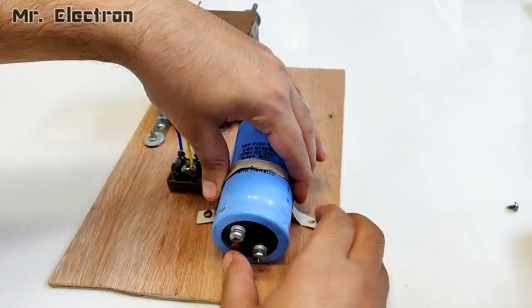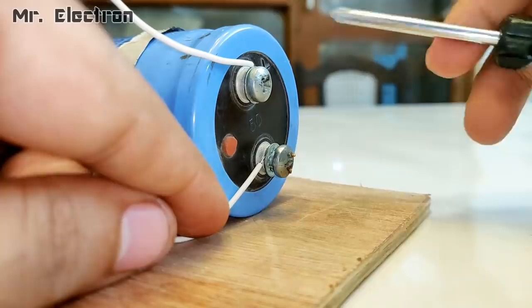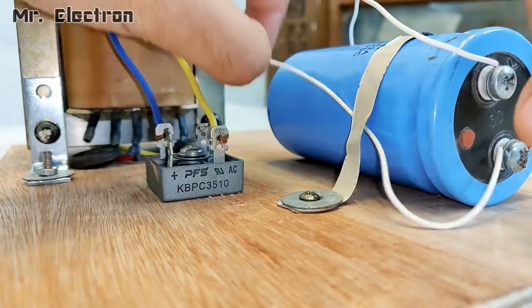So guys, here as you can see, I'm using an aluminum strip for holding the capacitor in place, and it is working pretty good and also looks good. Now I'm going to use two wires to connect the capacitor to the rectifier, keeping in mind positive to positive and negative to negative.